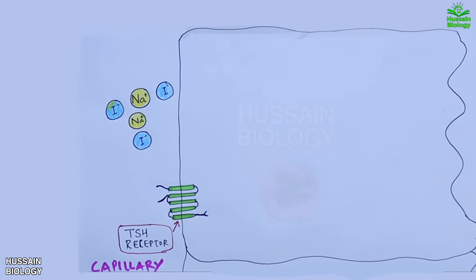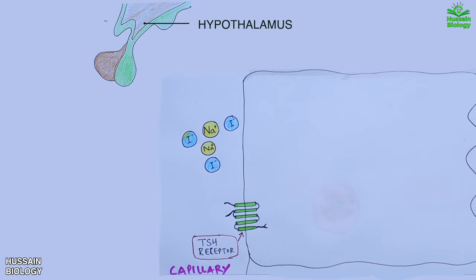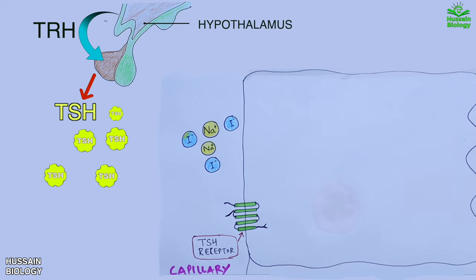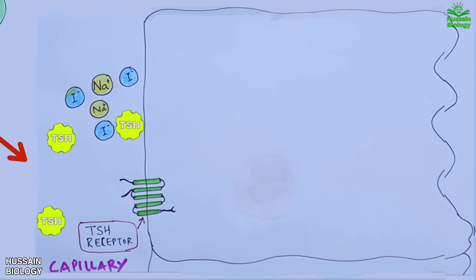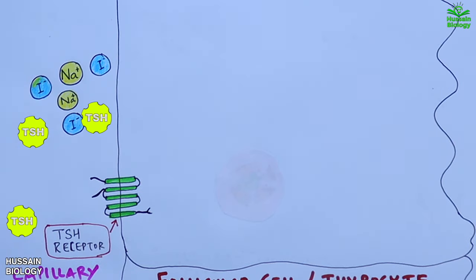Under the regulatory mechanism, when our body needs thyroid hormones, the hypothalamus releases TRH — thyrotropin releasing hormone — to target the anterior pituitary. Upon this targeting, the anterior pituitary releases TSH (thyroid stimulating hormone), which travels in the blood and binds to the TSH receptor on the follicular cell.